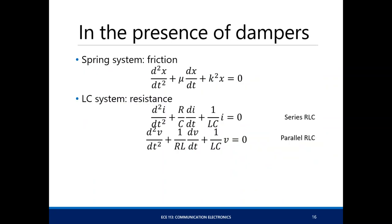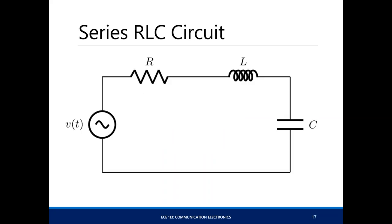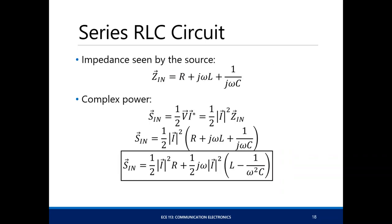Generally, we have two types of resonance circuits used in communication systems. One is the series RLC circuit — a series resistor, inductor, and capacitor. To analyze this, let's look at the impedance seen by the source: we add their impedances and view the complex power. The perfect way to view resonance is through the energy dissipated or consumed by the RLC circuit, giving us this equation for complex power.